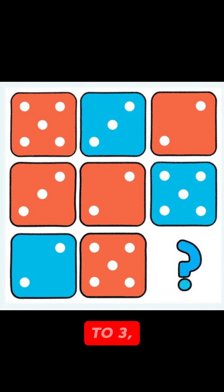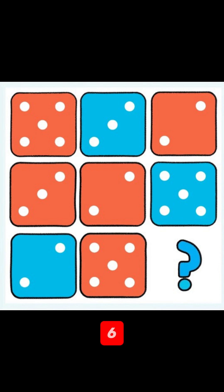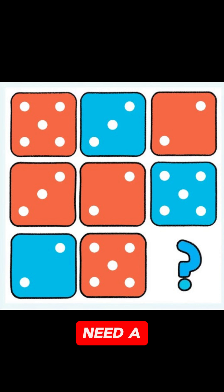But what about the front face? It goes from two to three to four to five. So the next front face must be a six. So we need a die with a five on top and a six on the front.